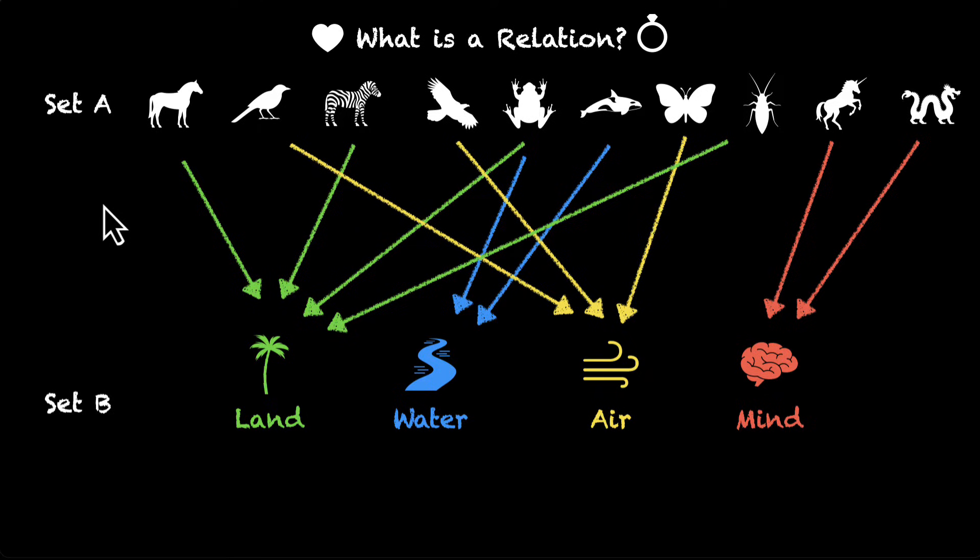We connected all elements of set A to all elements of set B. And if we combine all of that and then put that in a set, what would have that set called? That set would have called the Cartesian product of set A and B. That would be A times B.